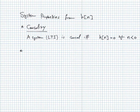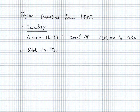The second property you can figure out easily from the impulse response is stability. Here we are talking about stability as defined by bounded input producing bounded output — we call that BIBO stability.